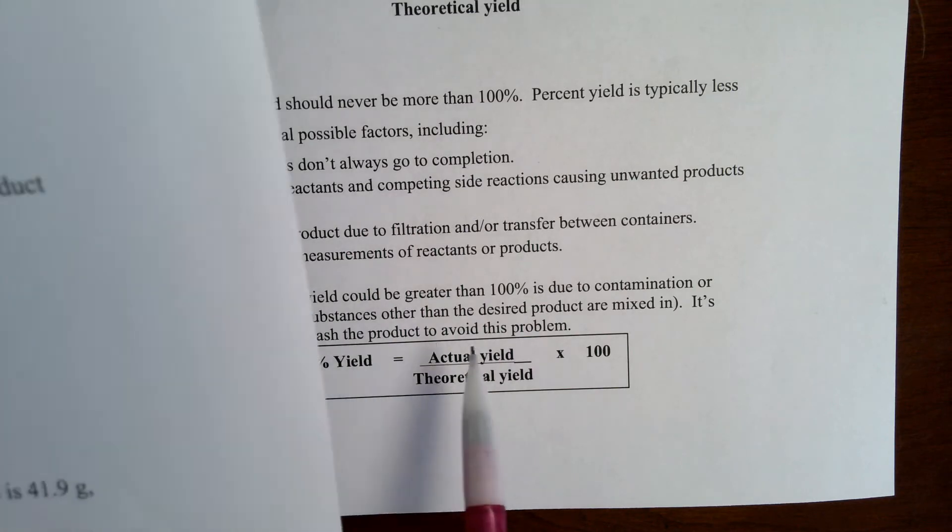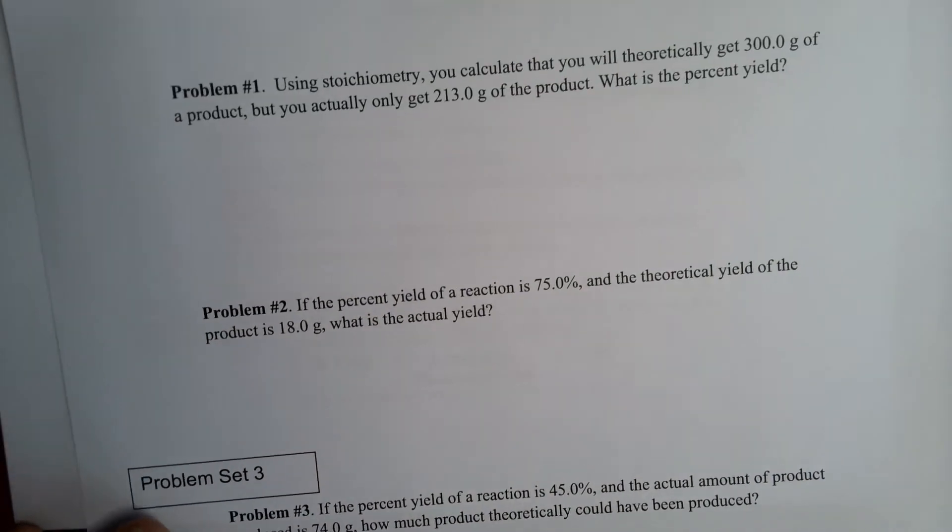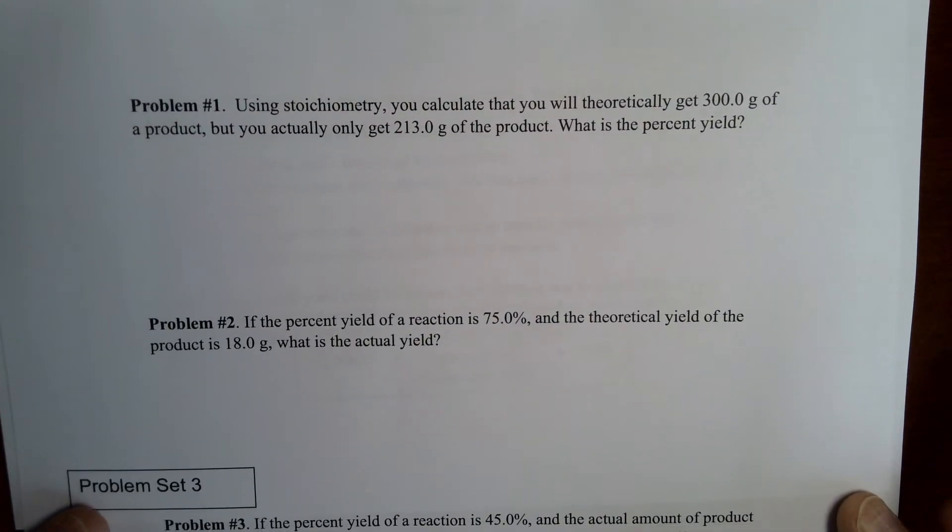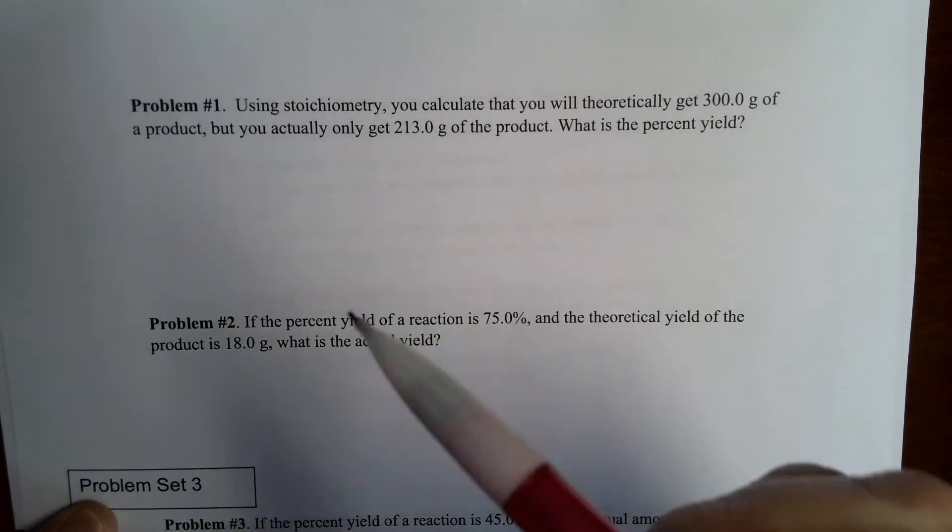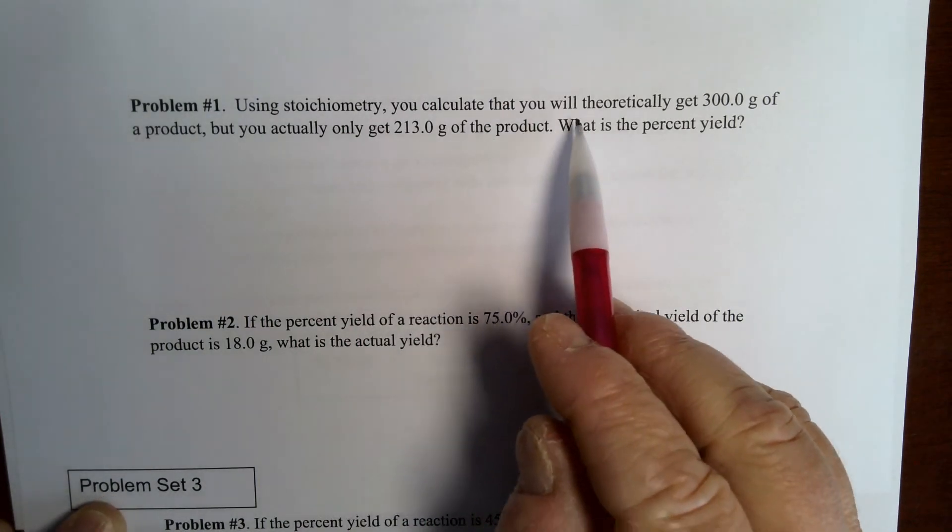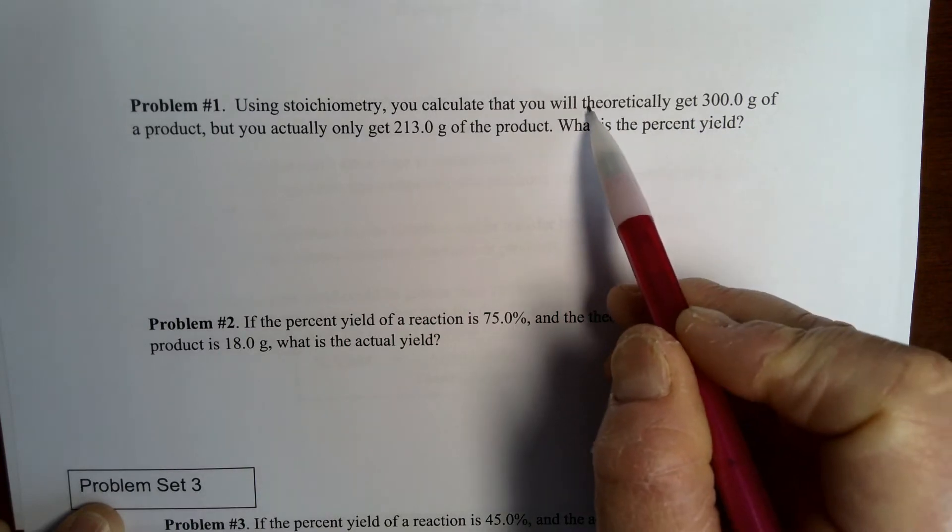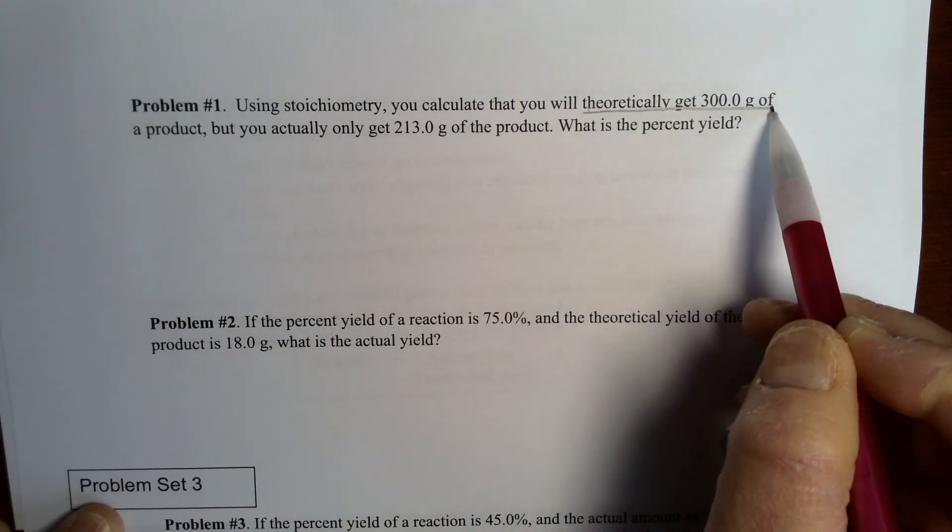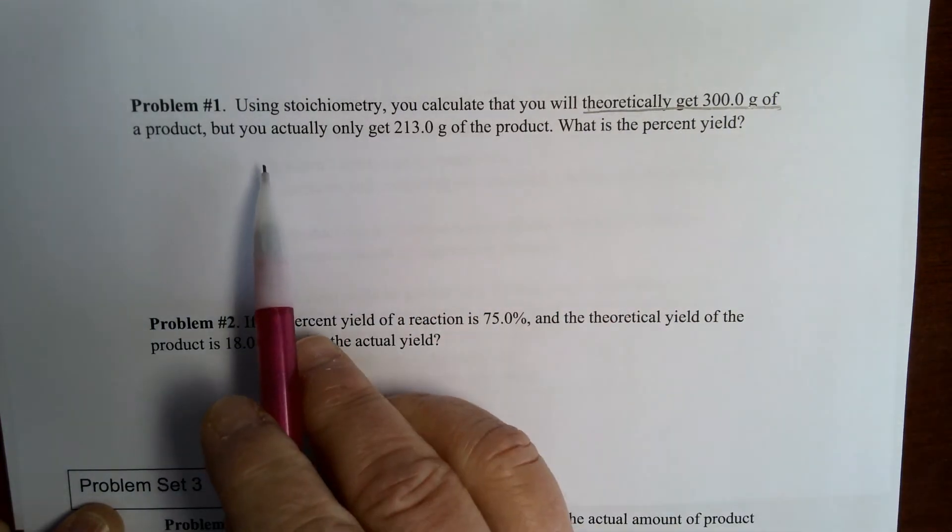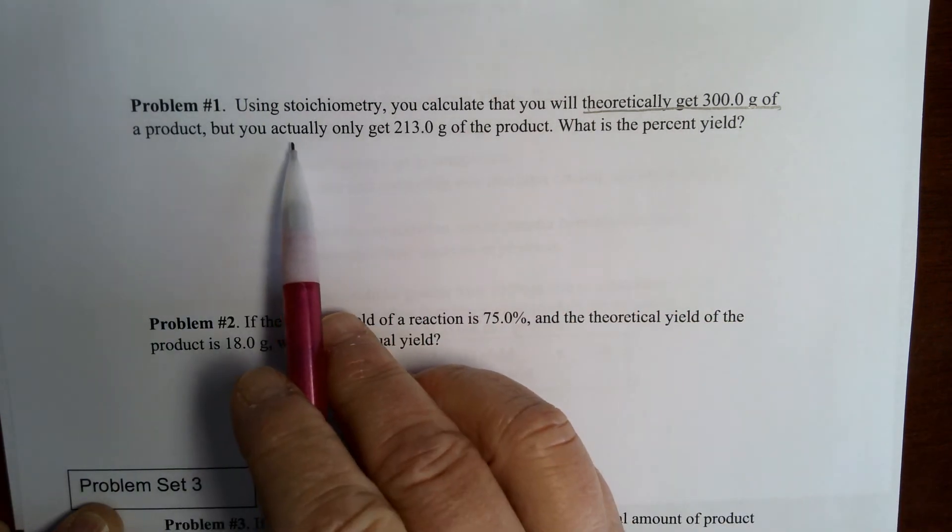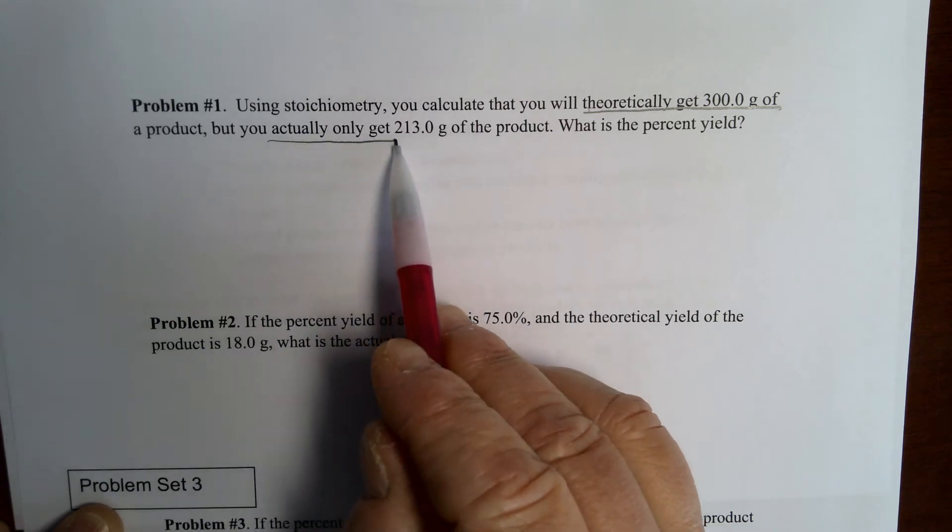So let's take a look at a couple of problems that you might come across. So what we have here is in problem number one, using stoichiometry, you calculate that you will theoretically get 300 grams of a product. So they're kind of tipping it off here that this is your theoretical yield. It's theoretically how much you can make. But you actually only get 213 grams of the product.